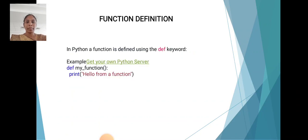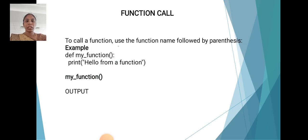Function definition. In Python, a function is defined using the def keyword. Example: def my_function(): print('Hello from a function'). Function call: to call a function, use the function name followed by parenthesis. The output is 'Hello from a function'.